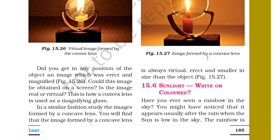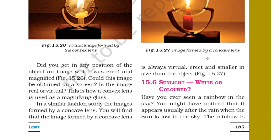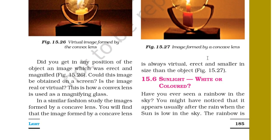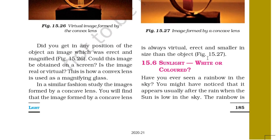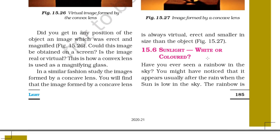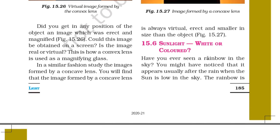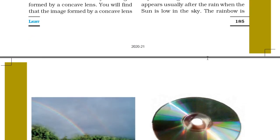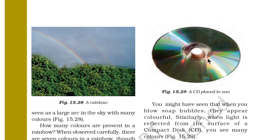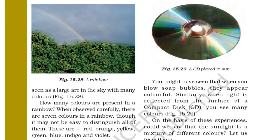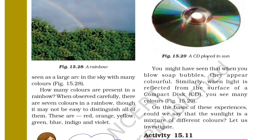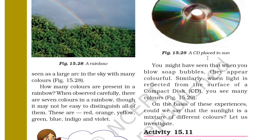Section 15.6: Sunlight — White or Coloured? Have you ever seen a rainbow in the sky? It appears usually after rain when the sun is low in the sky. The rainbow is seen as a large arc with many colors. When observed carefully, there are 7 colors in a rainbow, though it may not be easy to distinguish all of them. These are: red, orange, yellow, green, blue, indigo and violet.